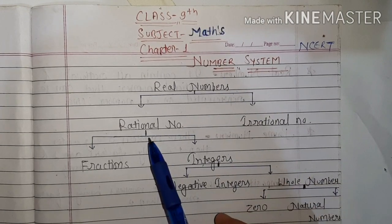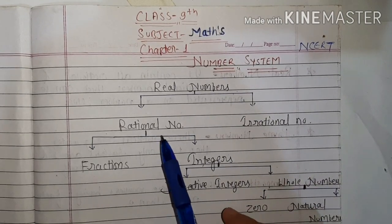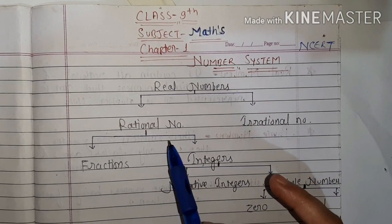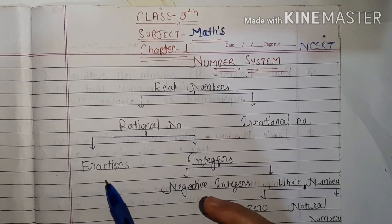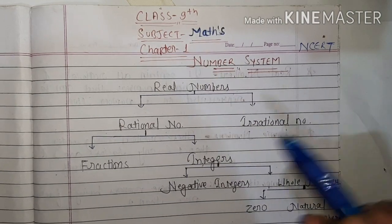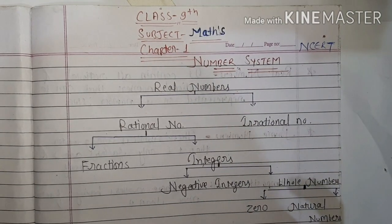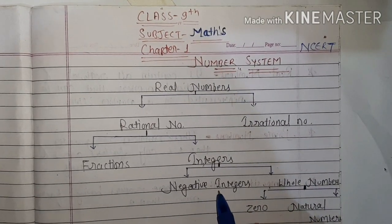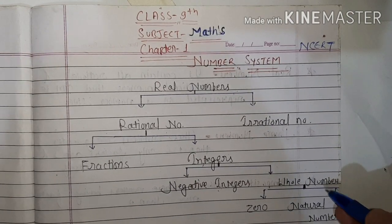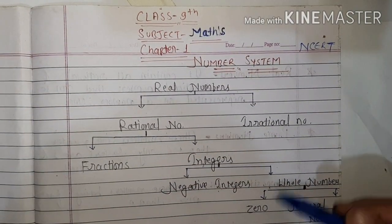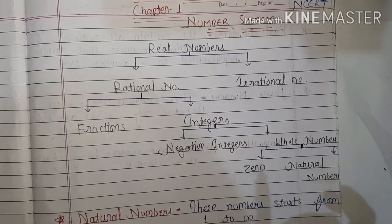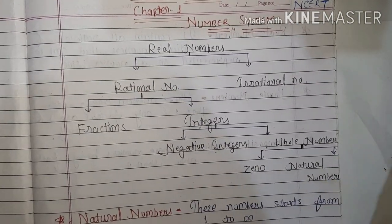Real numbers are made by two things: rational numbers and irrational numbers. Rational numbers are also made by two things: fractions and integers. Integers are made by two things: negative integers and whole numbers. Whole numbers are made by two things: zero and natural numbers.